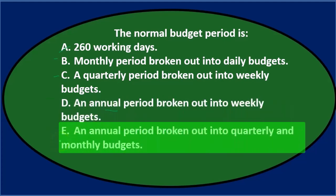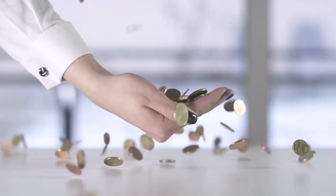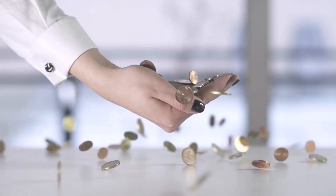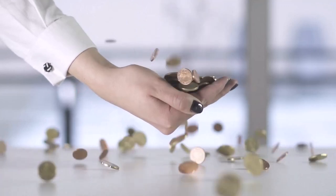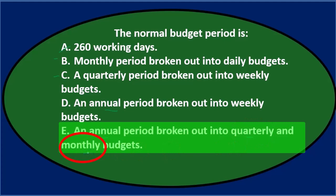And then E says an annual period broken out into quarterly and monthly budgets. That's the one that seems most normal because you've got an annual period, which seems like what it would be, and then it breaks out into the next component — quarters first — and then monthly. So of all these, E seems the most reasonable.